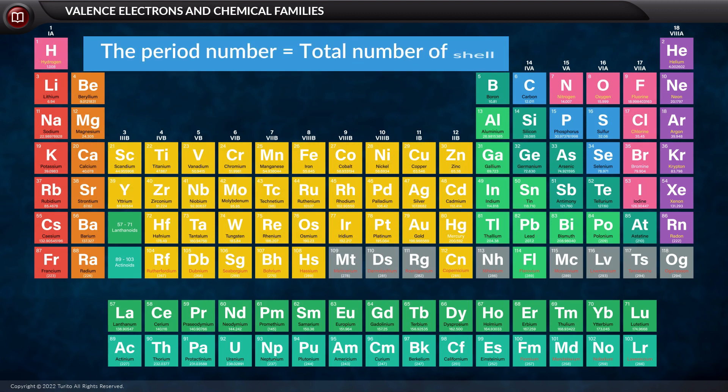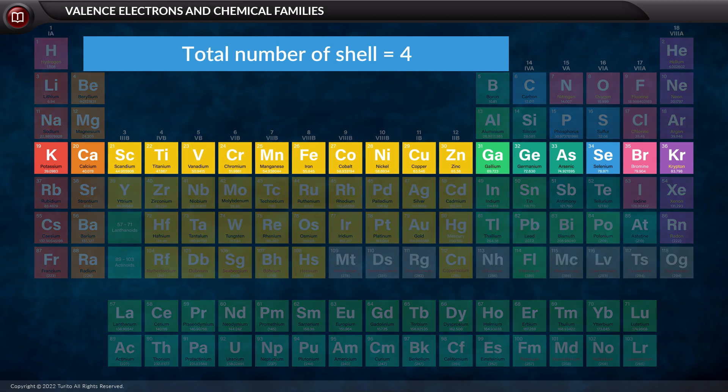Do you know that the period number of an element in the periodic table indicates the total number of shells that is present in the atom containing the electrons?